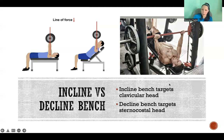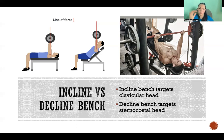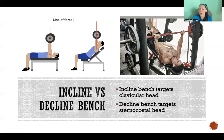With a decline bench, the line of force is always downward — it's the weight of whatever you're pushing. By changing the orientation of your body to a decline position, you target the lower fibers, meaning the sternocostal head, and especially the costal head if we divide those into two — so the lower fibers especially.